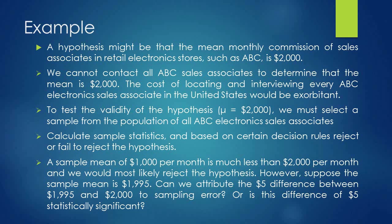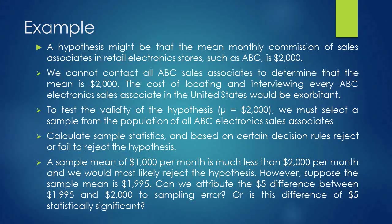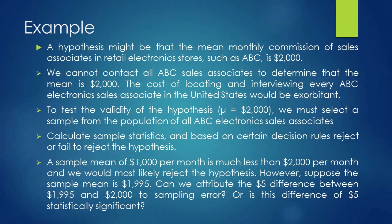To test the validity of the hypothesis mu equals $2000, we must select a sample from the population of all ABC electronic sales associates. We select a sample, calculate sample statistics, and based on certain decision rules, reject or fail to reject the hypothesis. Through the sample statistic we get a sample mean equal to $1000, while our population mean is $2000, so there is a large difference and we reject the hypothesis.